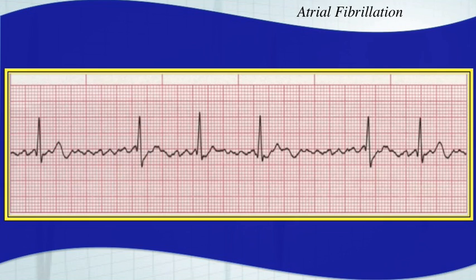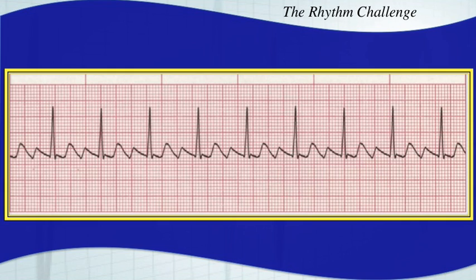This is atrial fibrillation. Get ready to hit that pause. Here's your next one — now you have atrial flutter with 3-to-1 conduction. Flutter waves continue throughout. There's one really hidden in that QRS complex. Three-to-one conduction.